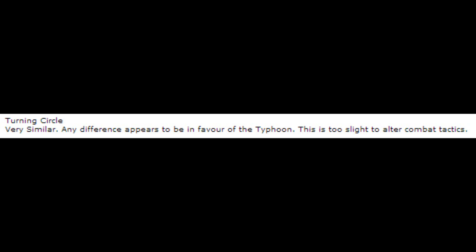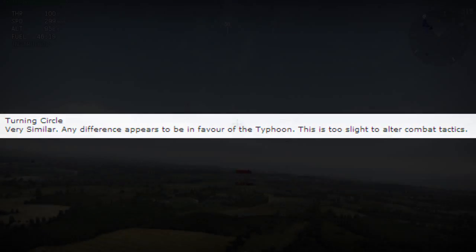Now I'll cite one of my sources again. In a comparative trial between the Tempest and the Typhoon, the source states that the turning circle was very similar, and any difference appears to be in favor of the Typhoon, but this is too slight to alter combat tactics. So it sounds like the Tempest shouldn't turn that much worse than the Typhoon.